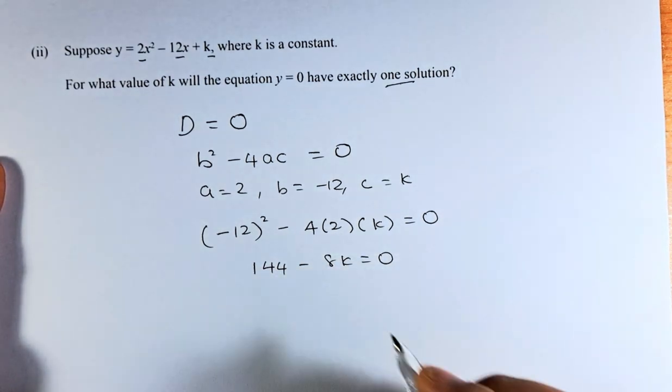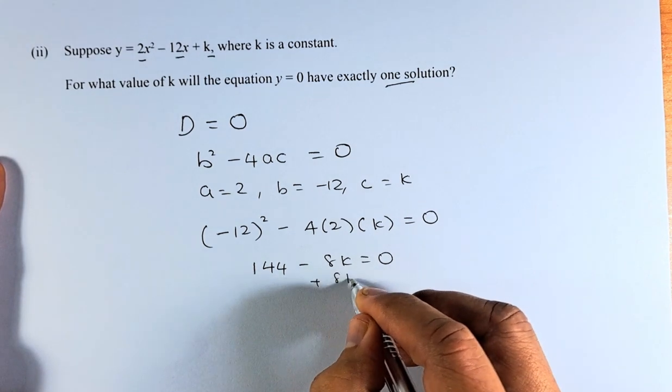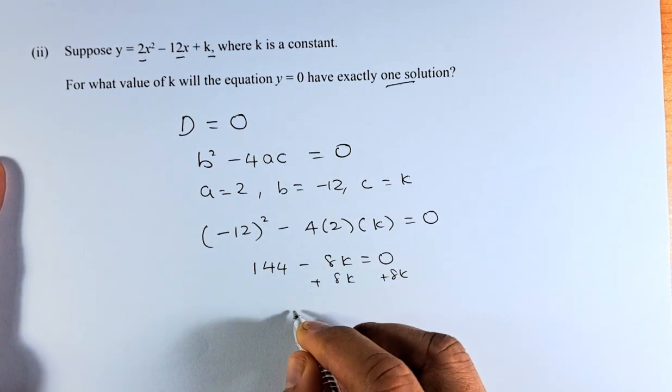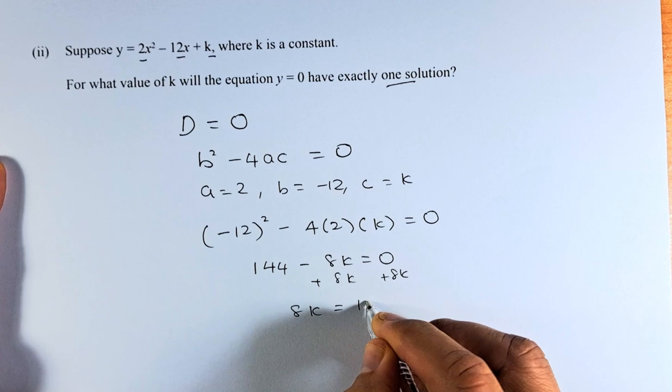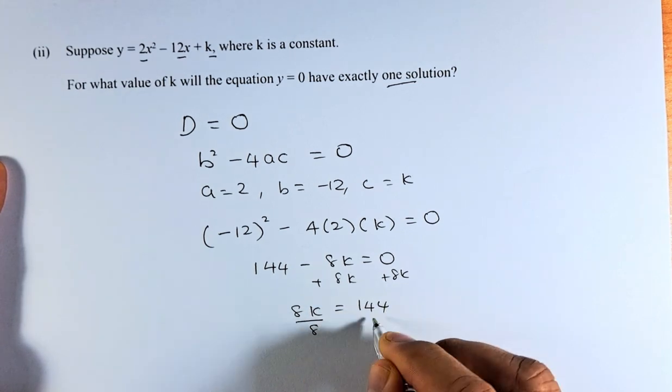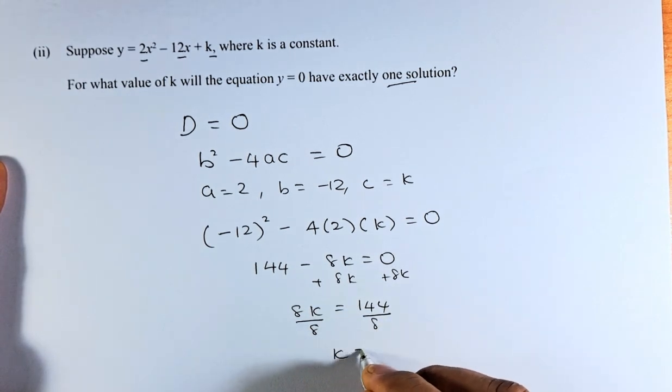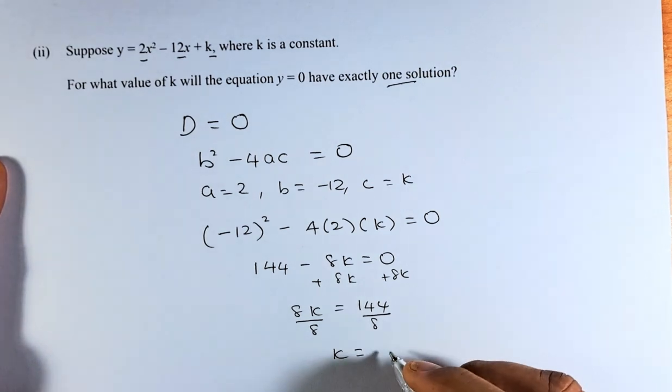To solve this, we are going to plus 8k on both sides. So we are going to be 8k = 144. And to solve this, we divide by 8 on both sides.